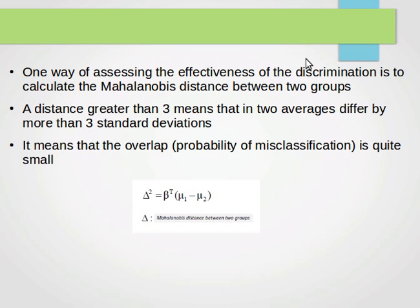One way to do that is to find the Mahalanobis distance between the two groups, between the first subset for the yes class and the second subset for the no class. To find that, we do delta square equals beta t beta transpose. This is the transpose of the coefficient vector times mu1 minus mu2. mu1 is the mean for the first subset, mu2 is the mean for the second subset. Usually people use a value of 3 for the Mahalanobis distance. Delta equals Mahalanobis distance between the two groups. Greater or less than 3 is usually used as a way to assess the effectiveness of discrimination.